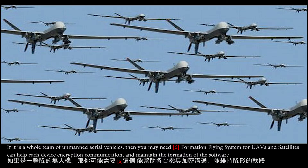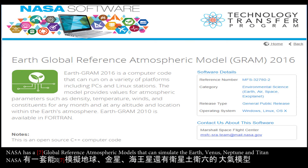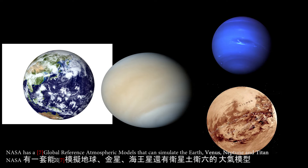If it's a whole team of unmanned aerial vehicles, then you may need a formation flying system for UAVs and satellites that can help each device with encrypted communication and maintain formation. NASA also has global reference atmospheric models that can simulate the Earth, Venus, Neptune, and Titan.